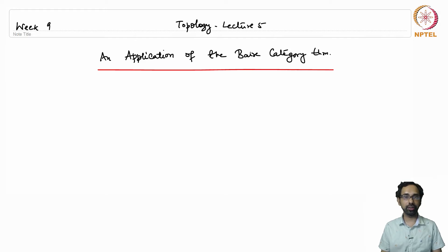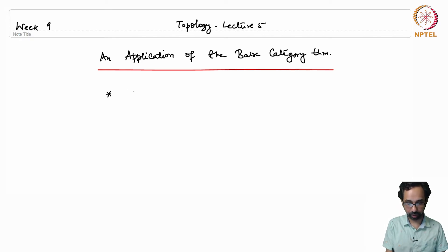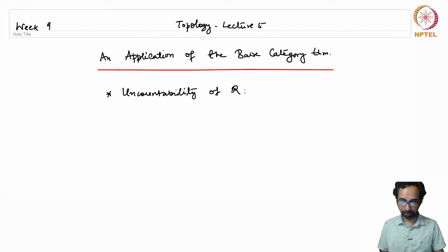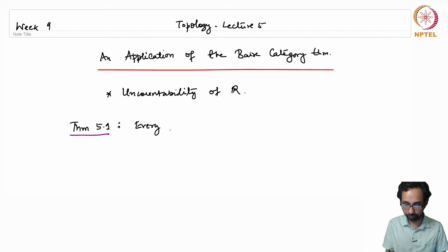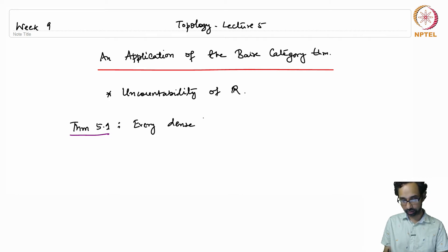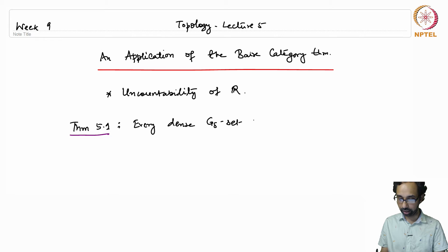We will end the discussion on the topic of Baire spaces with a small application about the uncountability of the set of real numbers R. We will actually show a slightly more general result, which is a theorem: every dense G-delta set of R is uncountable. I will explain in a moment what a G-delta set is.